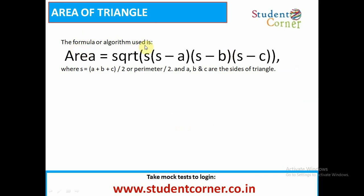The formula or algorithm used is area equals square root of s into s minus a into s minus b into s minus c, where s equals a plus b plus c by 2 or perimeter by 2, and a, b, c are the sides of the triangle.